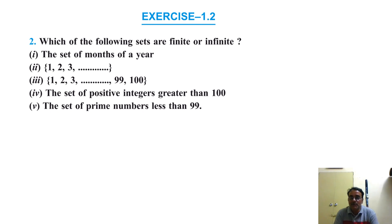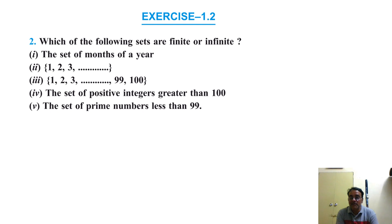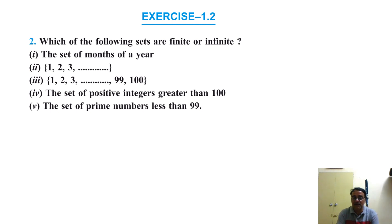The set {1, 2, 3, ...} goes on to infinity, so it is an infinite set. The set {1, 2, 3, ..., 99, 100} is a finite set because the numbers from 1 to 100 are finite in count. The set of positive integers greater than 100 has no end and cannot be counted, so it is an infinite set.